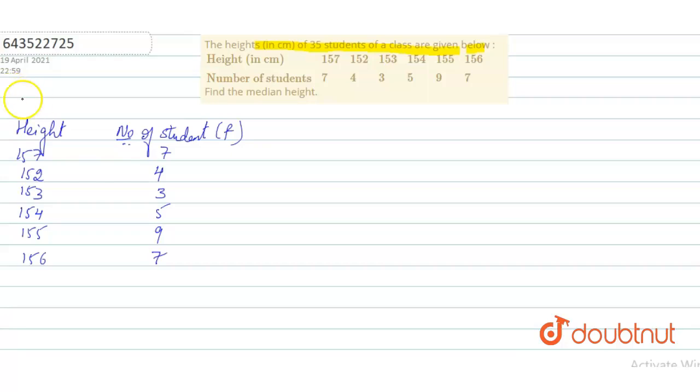Now what will we do? We will take cumulative frequency. So cumulative frequency will be 7, 7 plus 4 is 11, 11 plus 3 is 14, 14 plus 5 is 19, 19 plus 9 is 28, and 28 plus 7 is 35.